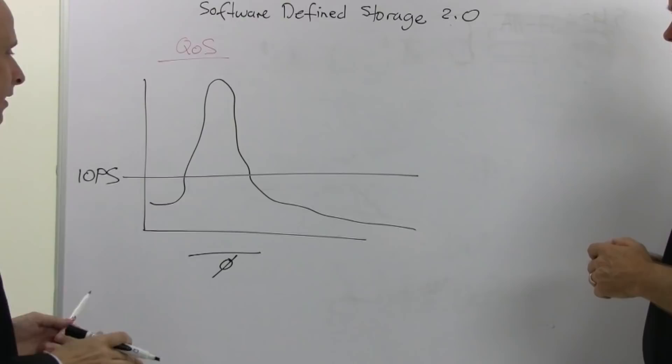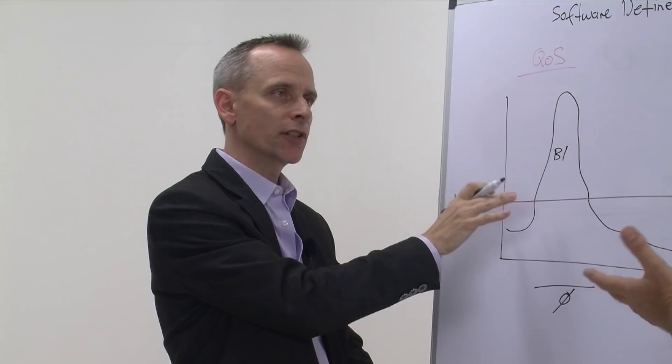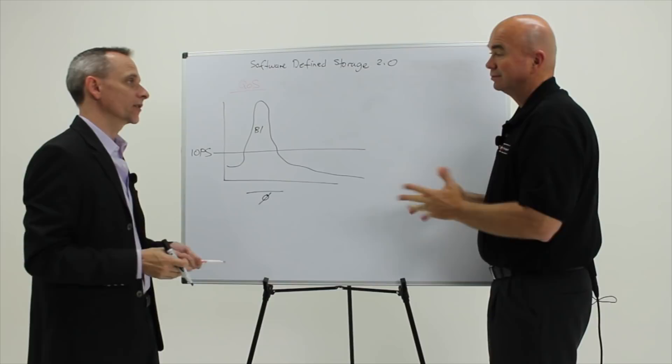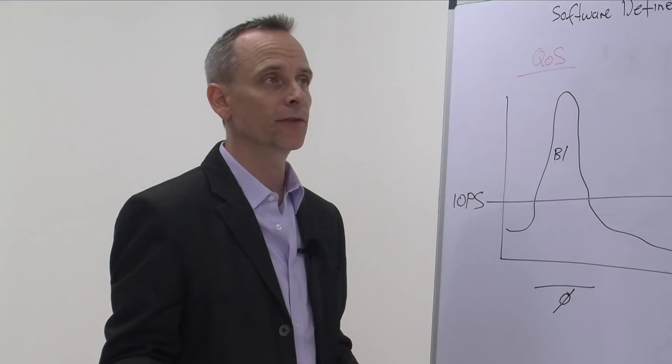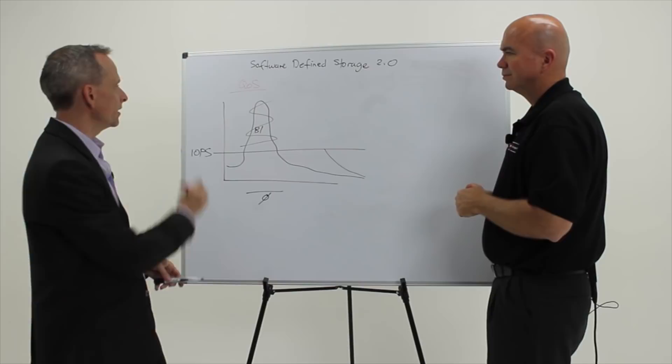So right now, storage quality of service is effectively an IOPS limiter. Pretend this was storage, and instead of downloading Game of Thrones, your BI tool suddenly woke up and decided to run its week's report. It's taking everything that storage can give, and so all the applications are dying — possibly even the ones that the revenue base of your company is running on. You can't have that. The BI tool is running a weekly report; maybe it's not needed for several days. So you have an IOPS limiter — this goes away, this takes longer, but everything else works. That's basically where storage is today, but networking kept going.